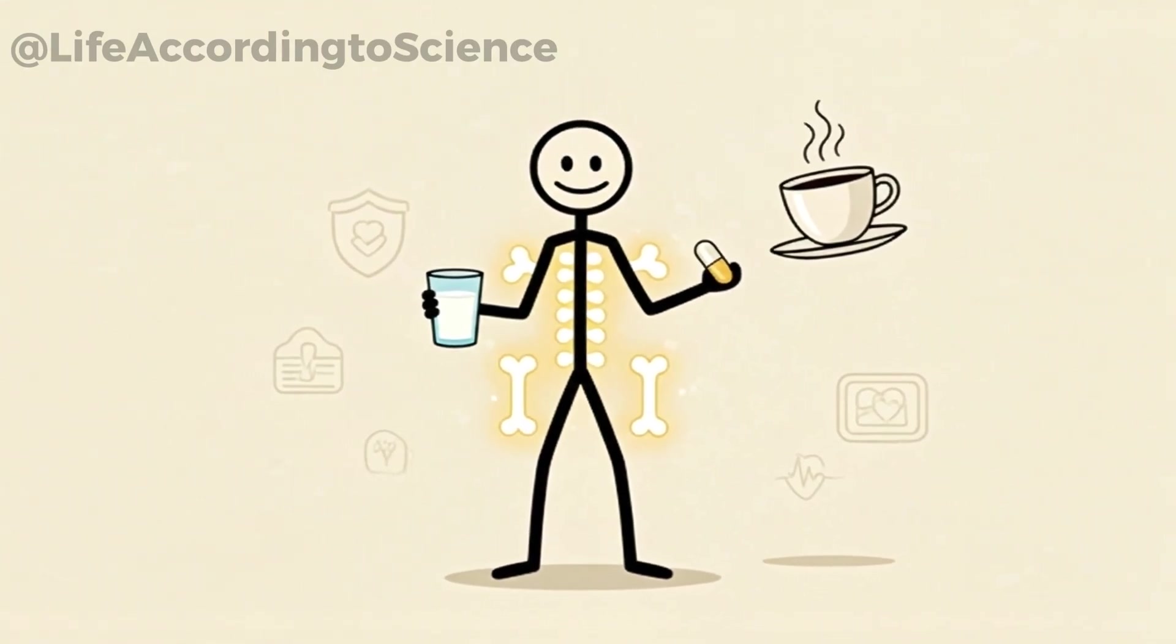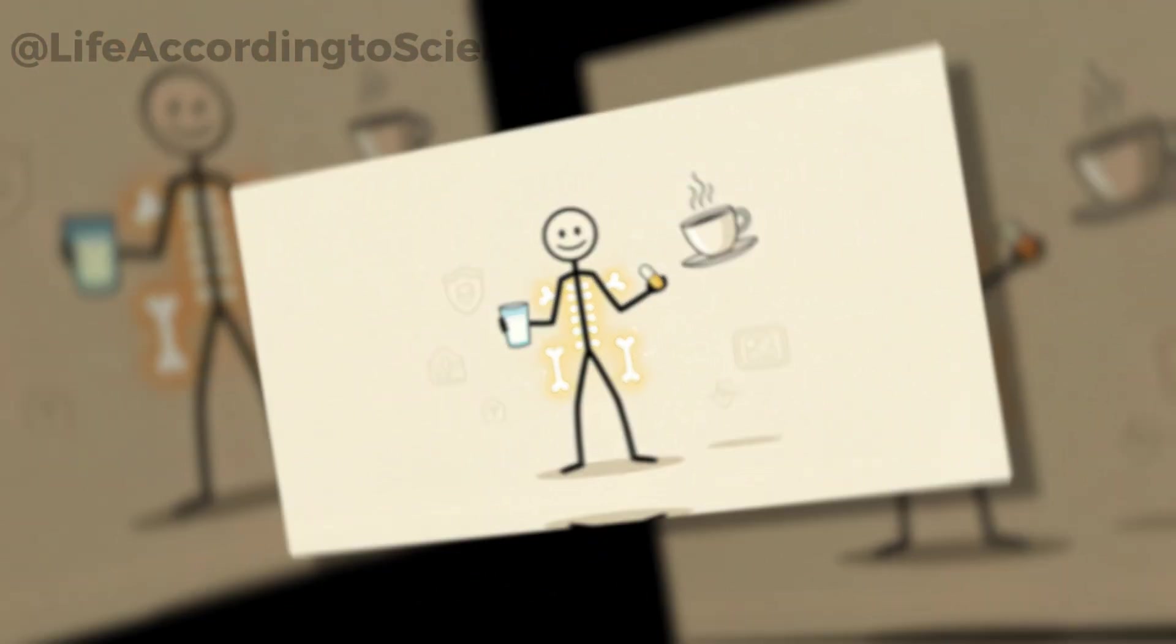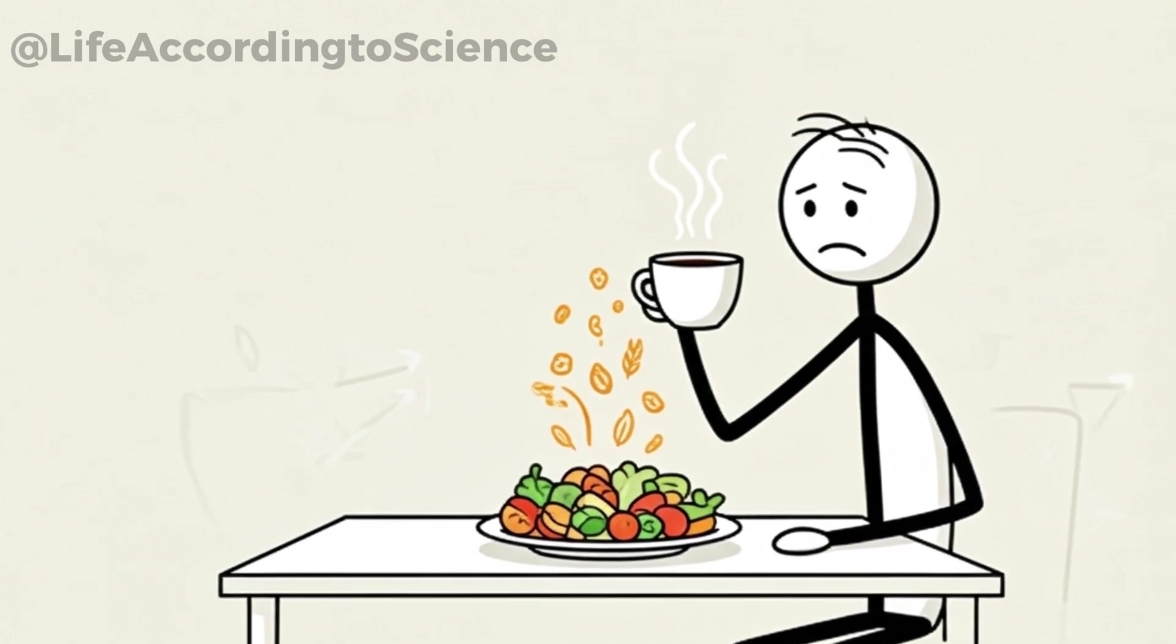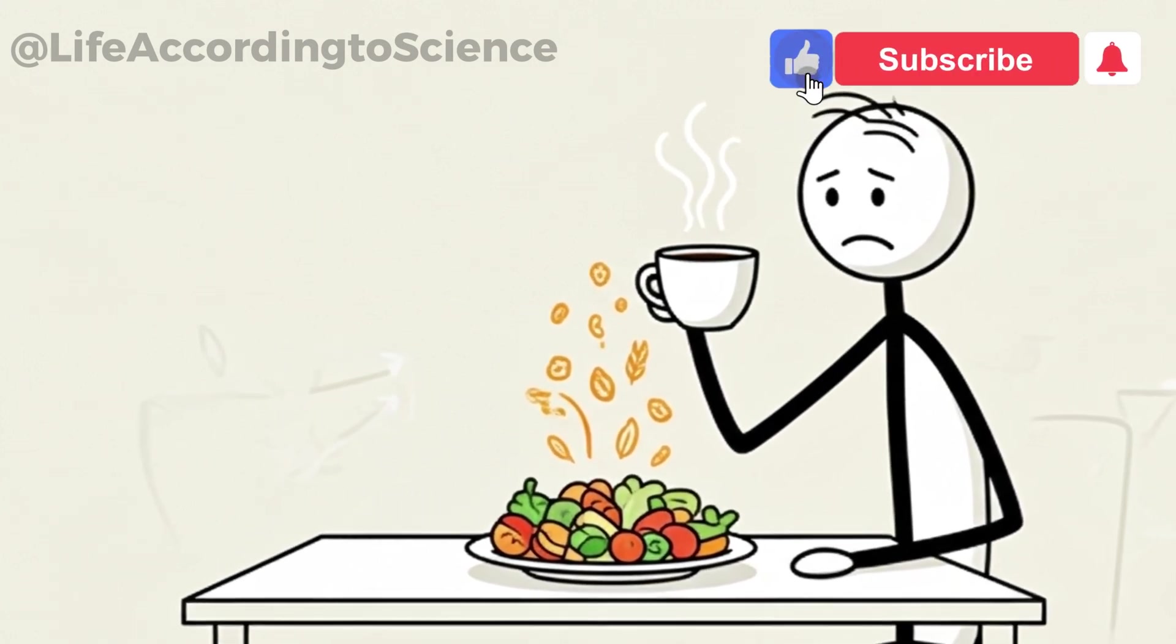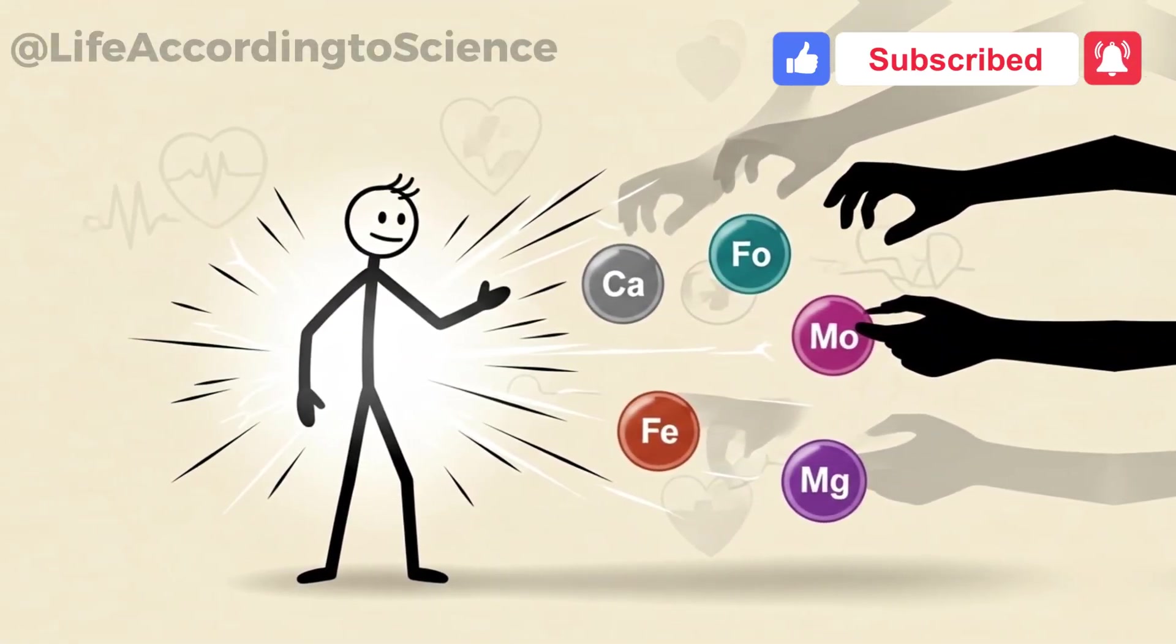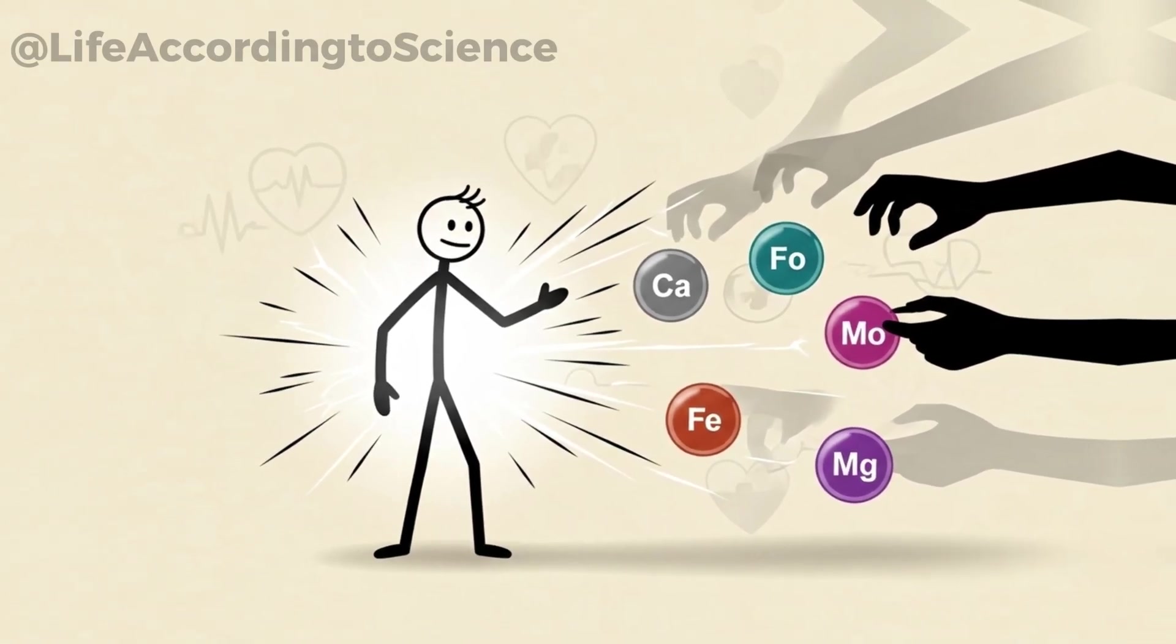Iron absorption is another concern, especially for those who rely on plant-based sources. Drinking coffee right after meals can block your body from fully absorbing the iron from vegetables and grains. So, while coffee gives energy in the short term, it may silently be robbing your body of the building blocks it needs for long-term health.